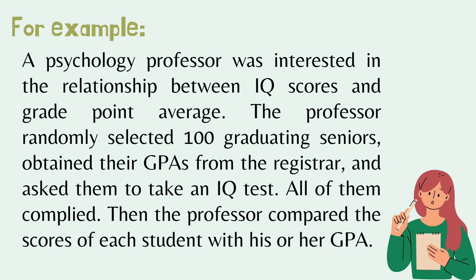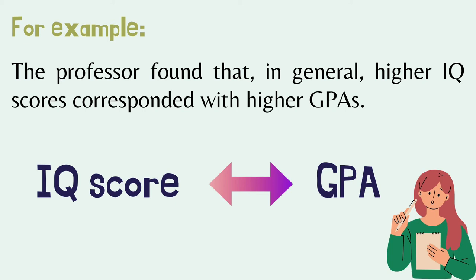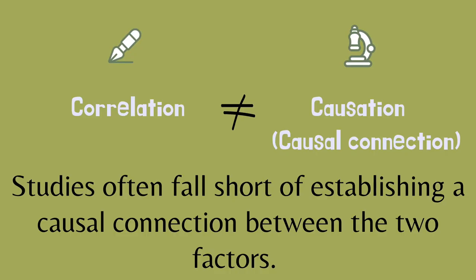For example, a psychology professor was interested in the relationship between IQ scores and grade point average. The professor randomly selected 100 graduating seniors, obtained their GPAs from the registrar, and asked them to take an IQ test. All of them complied. The professor found that, in general, higher IQ scores corresponded with higher GPAs. The results of this study indicate a positive correlation between IQ score and GPA. If the study showed that students with higher IQs had, in general, lower GPAs, this would indicate a negative correlation. Correlations are not equal to causation or causal connection, as studies often fall short of establishing a causal connection between two factors.